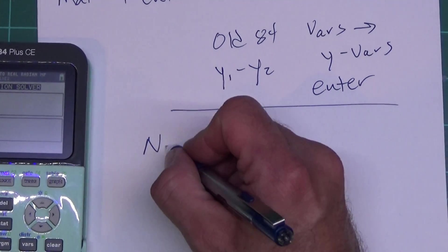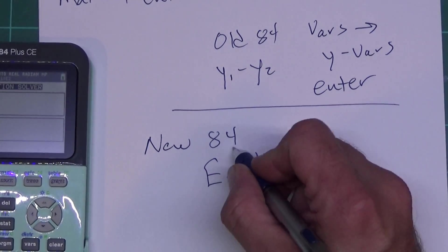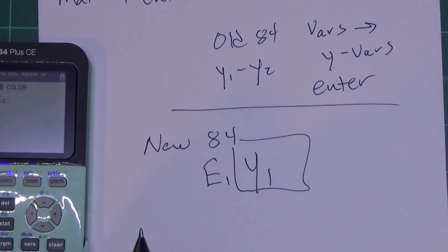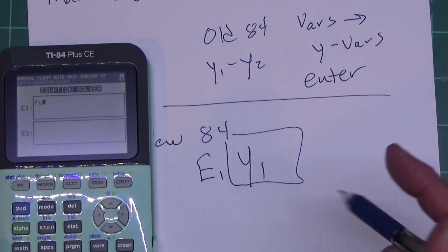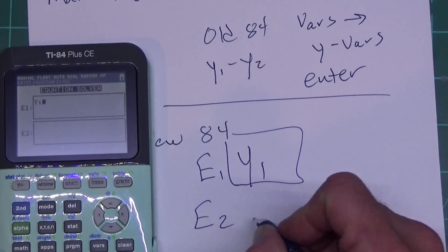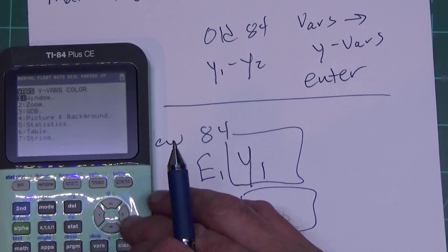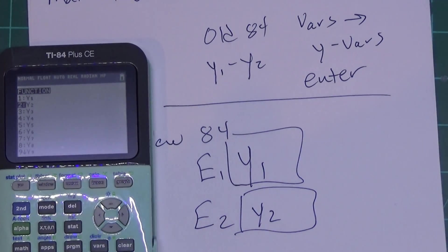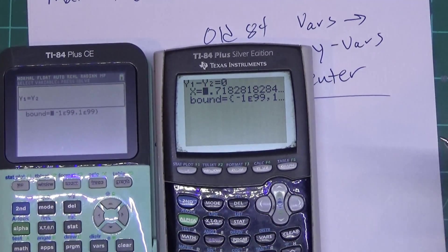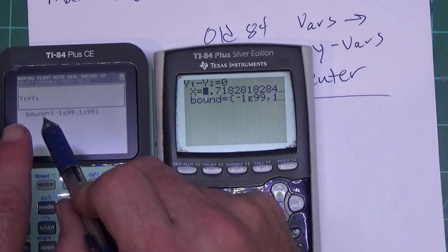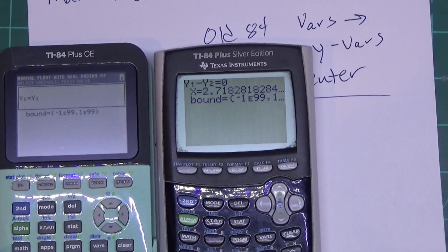On the new 84, in the box labeled e1, I just want to put y1. So I press Vars, arrow over to Y-VARS, press Enter twice. In e2 I want to put y2, so I press the down button to get to e2, press Vars, arrow over to Y-VARS, press Enter, go down to y2, press Enter. Now the two calculators say pretty much the same thing.